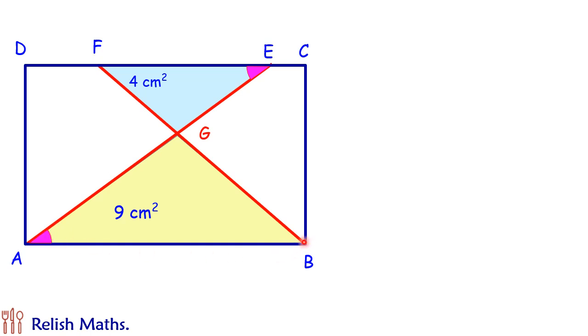Same way if we will take BF as transversal, then these angles will be equal. These blue angles will be equal to each other. By AA similarity we can say that triangle FGE is similar to triangle BGA.